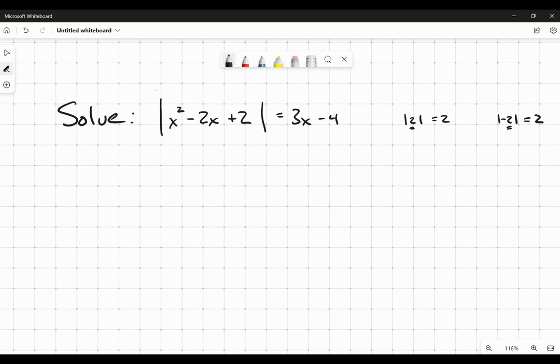So in this case, it could be that x squared minus 2x plus 2 equals positive 3x minus 4, or x squared minus 2x plus 2 equals the negative of that value.